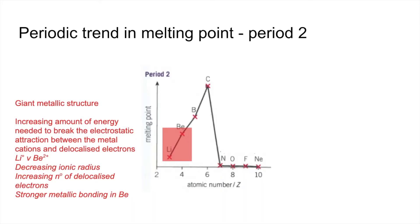The first two elements are lithium and beryllium. Lithium's melting point is not massively high but higher than the later elements, and beryllium's is quite a bit higher. Remember it's a giant metallic structure, so there's an increasing amount of energy needed to break the electrostatic attraction between the metal cations and the delocalised electrons. Beryllium's melting point is higher than lithium's because we have Li⁺ versus Be²⁺ — a decreasing ionic radius and increasing number of delocalised electrons, giving stronger metallic bonding in beryllium.